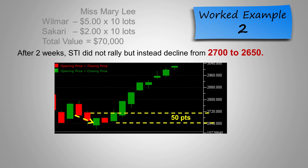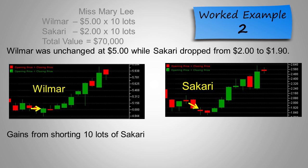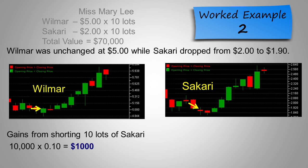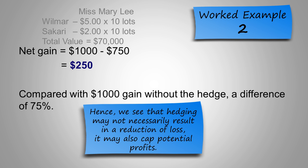After two weeks, STI did not rally but instead declined from $2,700 to $2,650. Calculating the loss from going long, we get about $750. Wilmar remained unchanged at $5, while Sakari dropped from $2 to $1.90. We can calculate the gains from shorting 10 lots of Sakari, which gives us a total of $1,000. When we calculate the net gain from this hedge, we get a total of $250. Comparing this with the $1,000 gain she should have been getting, there is a difference of 75%. Hence, we see that hedging may not necessarily result in a reduction of loss — it may also cap potential profits.